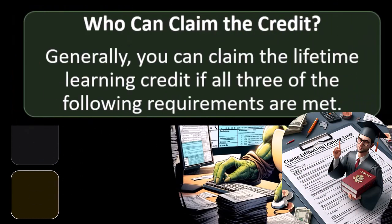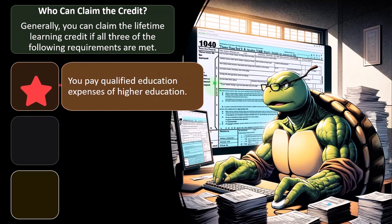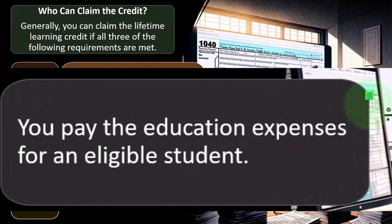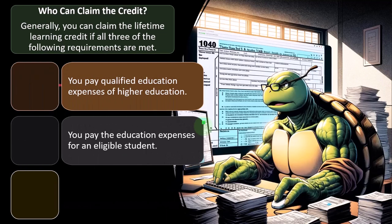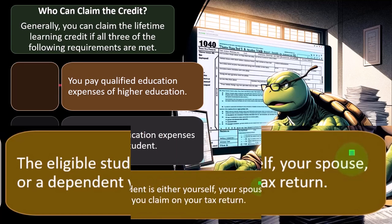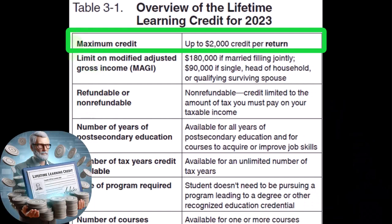Generally, you can claim the Lifetime Learning Credit if all three requirements are met: you pay qualified education expenses for higher education; you pay those expenses for an eligible student; and the eligible student is either yourself, your spouse, or a dependent you claim on your tax return.